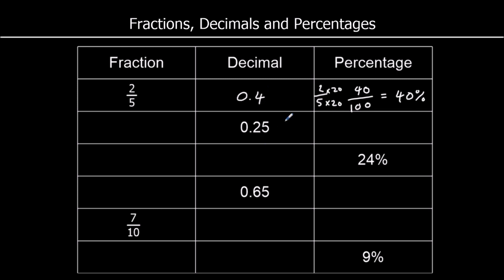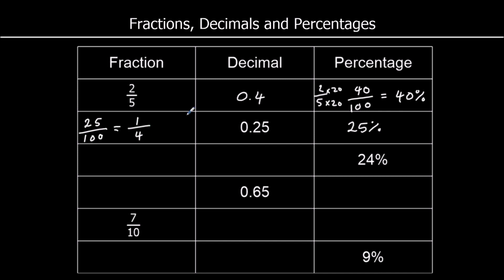The second one: we've got 0.25. To find the percentage: 0.25 times 100. Times by 10 once is 2.5, times by 10 twice is 25. So it's 25%. As a fraction, that's 25 out of 100. We can simplify by dividing top and bottom by 25, giving one quarter.